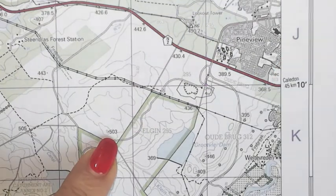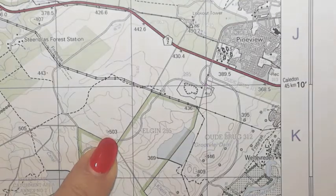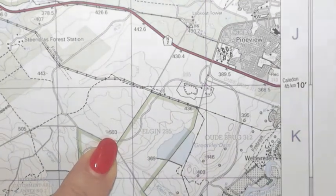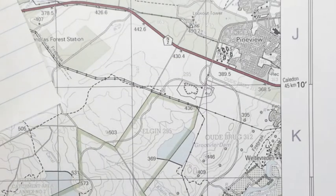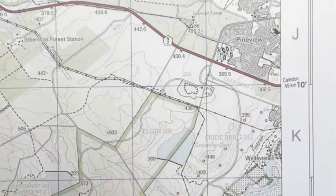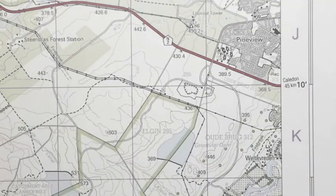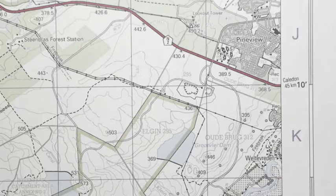So the first thing we need to know is that when we calculate gradient, what is the formula? And if you remember correctly, the formula is gradient equals vertical interval over horizontal equivalent. So I've got two, three pieces of information that I need.